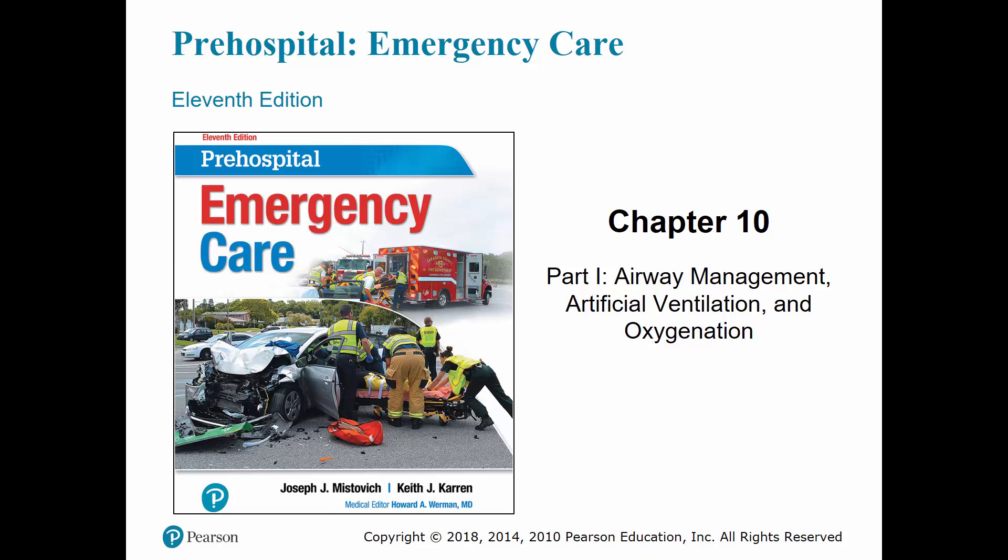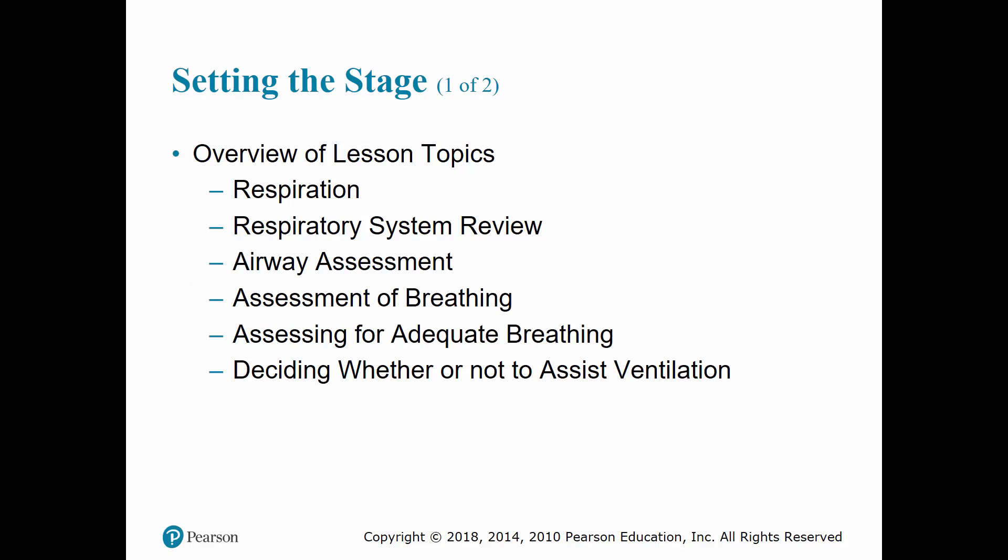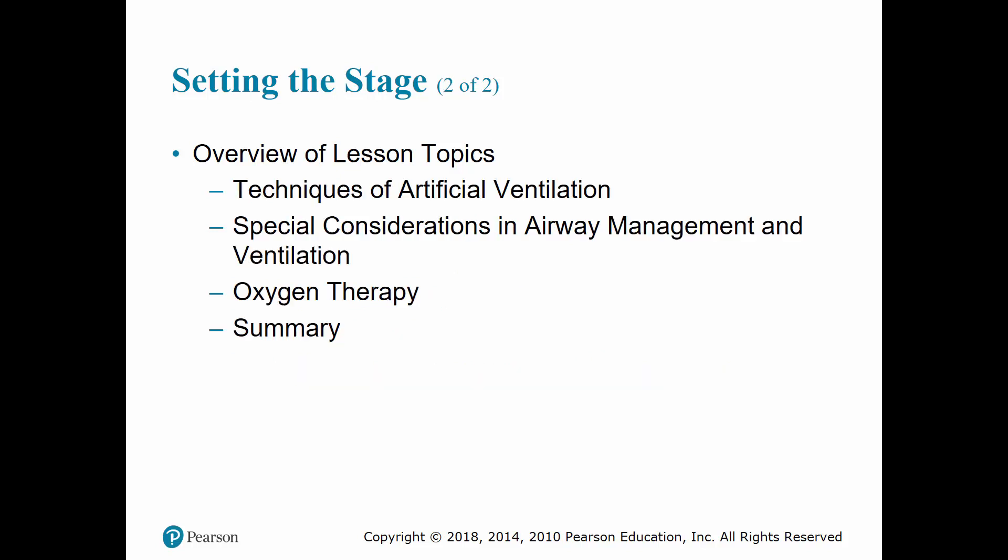All right, hey guys, today we're going to be going over chapter 10, discussing airway management, artificial ventilation, and how to oxygenate our patients. In this chapter we're going to review our respiratory system, go over what respiration is, how to assess an airway, assess breathing, what is adequate breathing and what is inadequate breathing, and how to decide whether or not we have to assist in our patient's ventilation. We'll also cover how to provide artificial ventilation, some considerations and management, various types of oxygen therapy, and we'll summarize everything at the end.